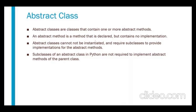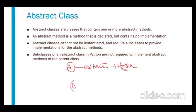Abstract classes cannot be instantiated and require subclasses to provide implementations for the abstract methods. When I create an abstract class that contains abstract methods, we cannot create an object for the abstract class. Whichever class is created to implement those methods from the abstract class — we can create an object for that subclass.